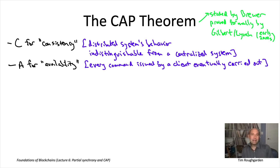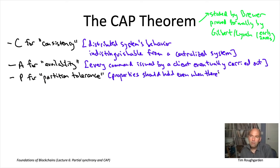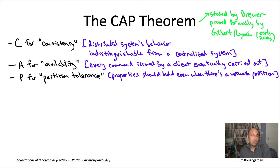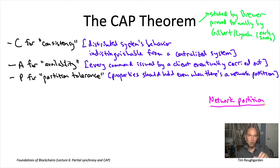More generally, in a distributed systems context, you want the user experience — from the user or client perspective — to be indistinguishable from interacting with a centralized system, like a single database residing on a single server. The A stands for availability, and that's going to play a similar role that liveness plays for us in state machine replication.